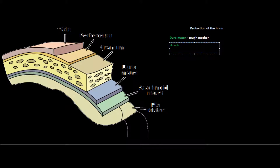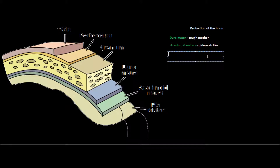The second structure that makes up the meninges is the arachnoid mater, which is much softer than the dura mater. As you move closer to the brain, the structures get progressively softer. The arachnoid mater is spider-web-like with little openings, almost like a sponge, and it's much softer than the dura mater. It helps to cushion the brain as you get closer to it.